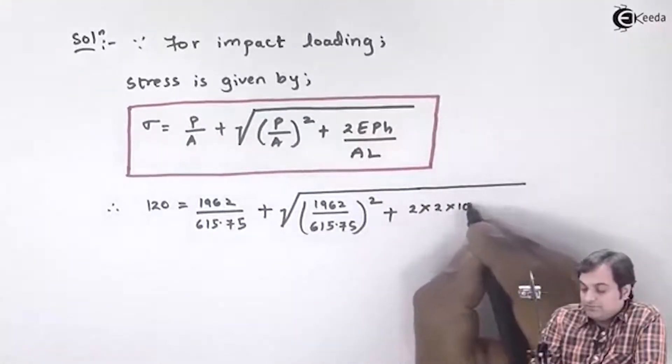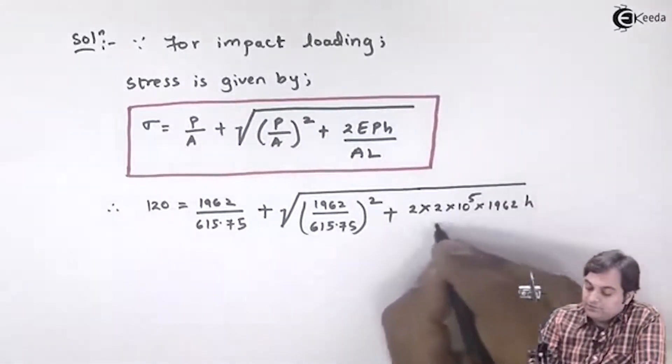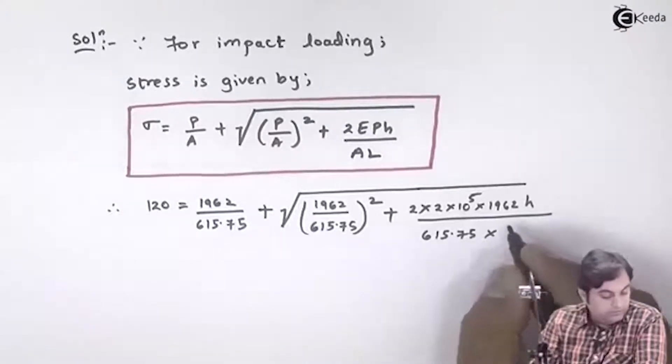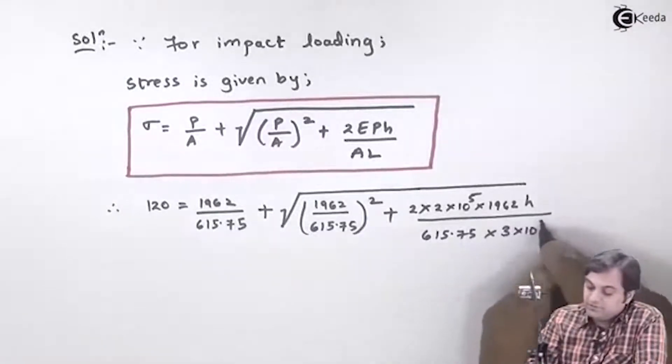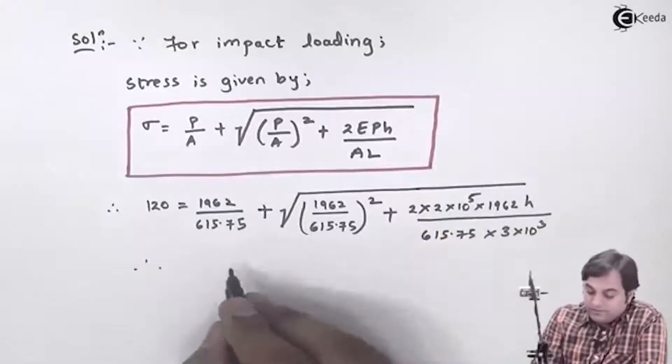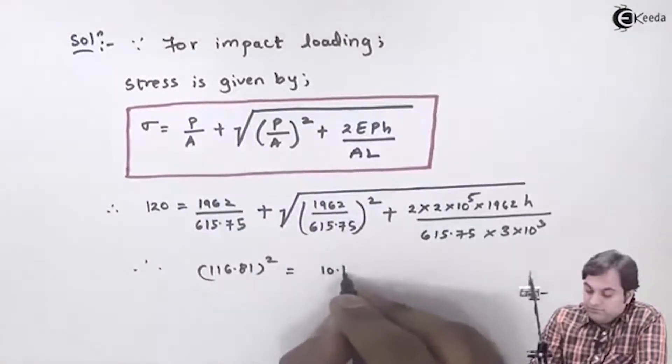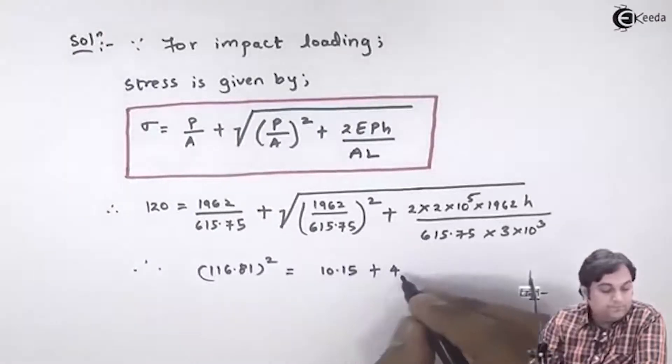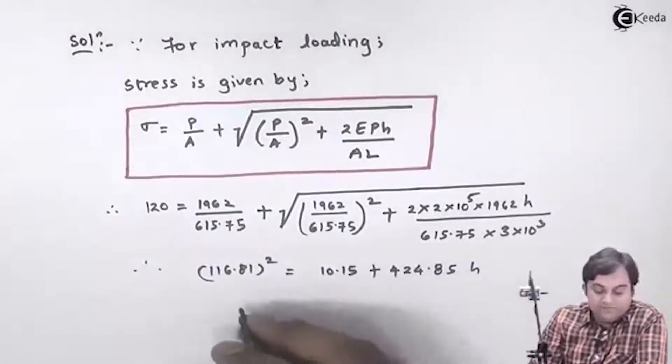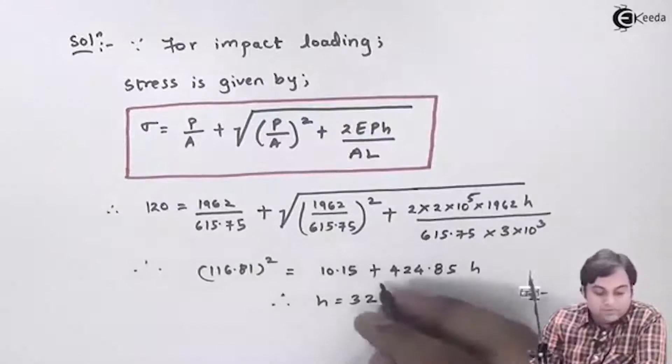Calculating this and shifting the square root sign: (116.81)² = 10.15 + 424.85h. Shifting the terms, the final answer is h = 0.32 meters.